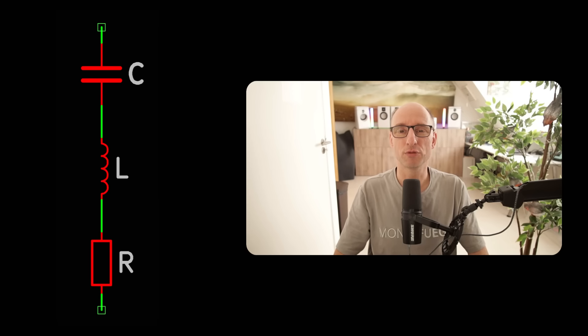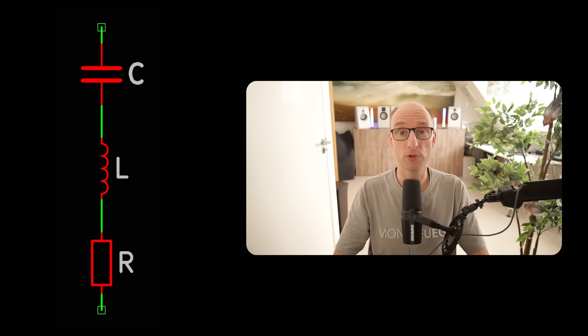This is a simplified model for a capacitor — it's an RLC series network. If you want to do simulations with this, you will need the values of these components. But where do you find those?